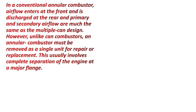In a conventional annular combustor, airflow enters at the front and is discharged at the rear. The primary and secondary airflow are much the same as the multiple can design. However, unlike a can combustor, an annular combustor must be removed as a single unit for repair or replacement, which usually involves complete separation of the engine at a major flange.